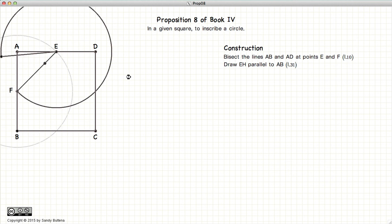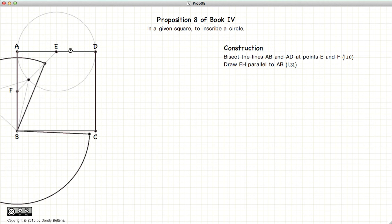Then we are going to draw a line parallel to AB, starting at point E. And likewise, we are going to draw another line that is parallel to AD from point F.